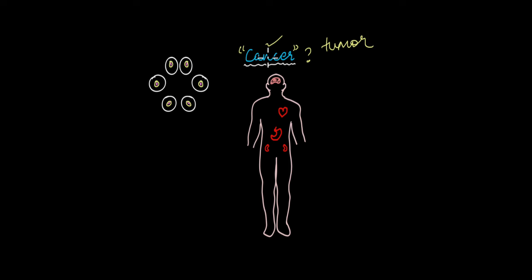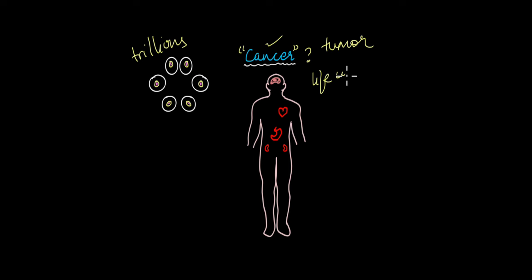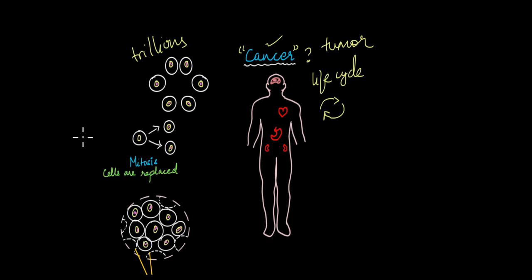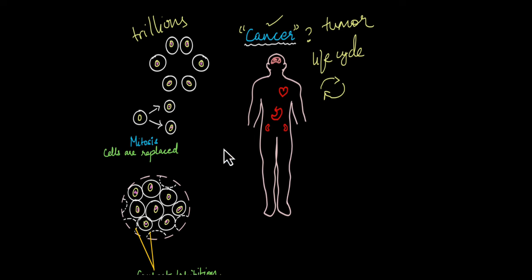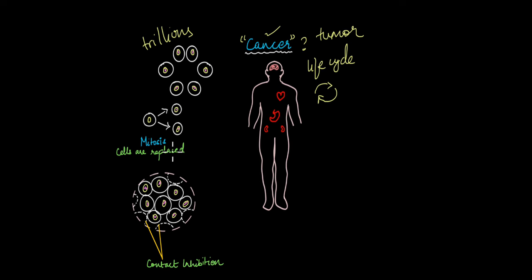To understand what cancer is, you have to go back to the fact that your body is made up of trillions of cells. All organs in your body are made up of cells, and all of these cells have a specific life cycle — they are formed, they perform their functions, and then they die off. When cells are dying, they need to be replaced with new cells. You might be familiar with the process by which cells are replaced in our body — that is mitosis.